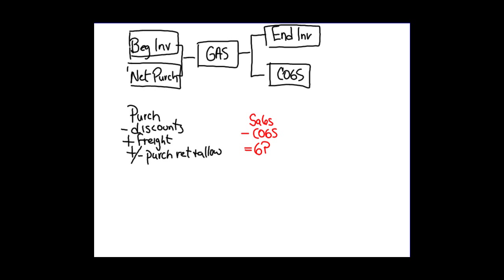As we read the question, we'll put the information on the chart. On January 1st, the candy store had $450,000 of inventory at cost — that's the beginning inventory. During the first quarter, it purchased $1,590,000 of merchandise. It returned $23,100 of merchandise, so we subtract that. And it paid freight charges of $37,600, which we add.